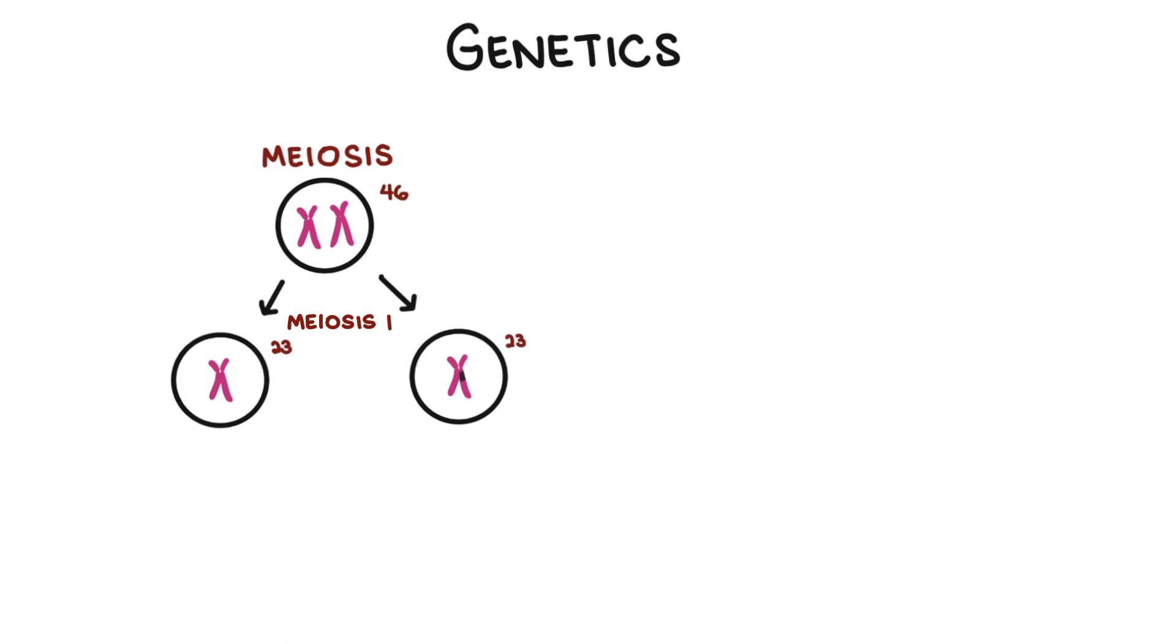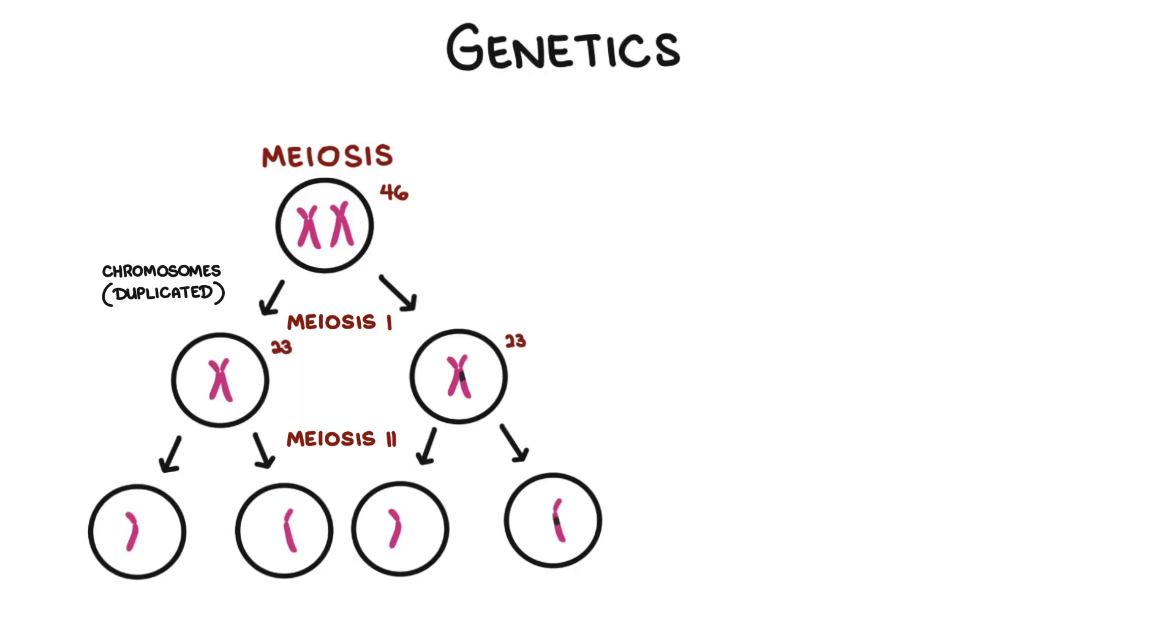The 23 chromosomes are still duplicated. Then meiosis occurs where the chromosomes separate and then you form the sex cells, each with 23 chromosomes but single chromosomes and they are no longer duplicated.